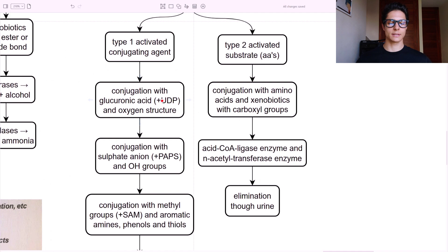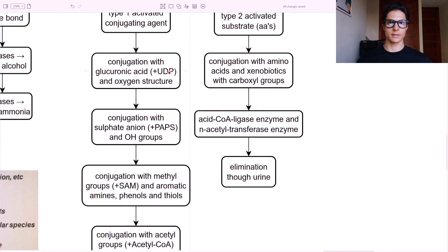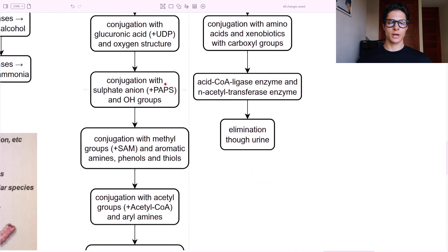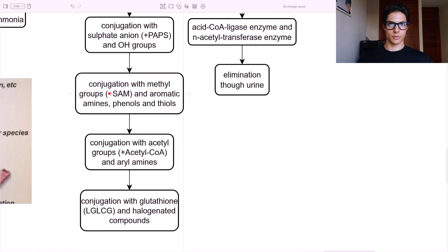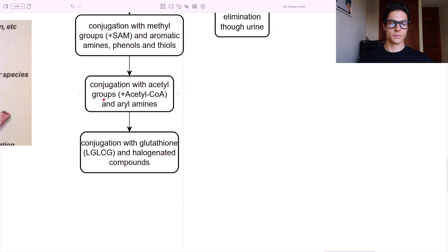In type one, we can have a conjugation with the glucuronic acid and an oxygen structure using UDP as a donor agent. Or a conjugation with a sulfate anion and PAPS - phosphoadenosine phosphosulfate - and OH groups of the xenobiotic molecule, of course. Conjugation with methyl groups and S-adenosylmethionine together with aromatic amines, phenols, and thiols of the xenobiotic. Conjugation with acetyl groups and acetyl-CoA as a cofactor and the aryl amines of the xenobiotic. And conjugation with glutathione and the halogenated compounds we can find in xenobiotics such as DDT or other halogenated pesticides.